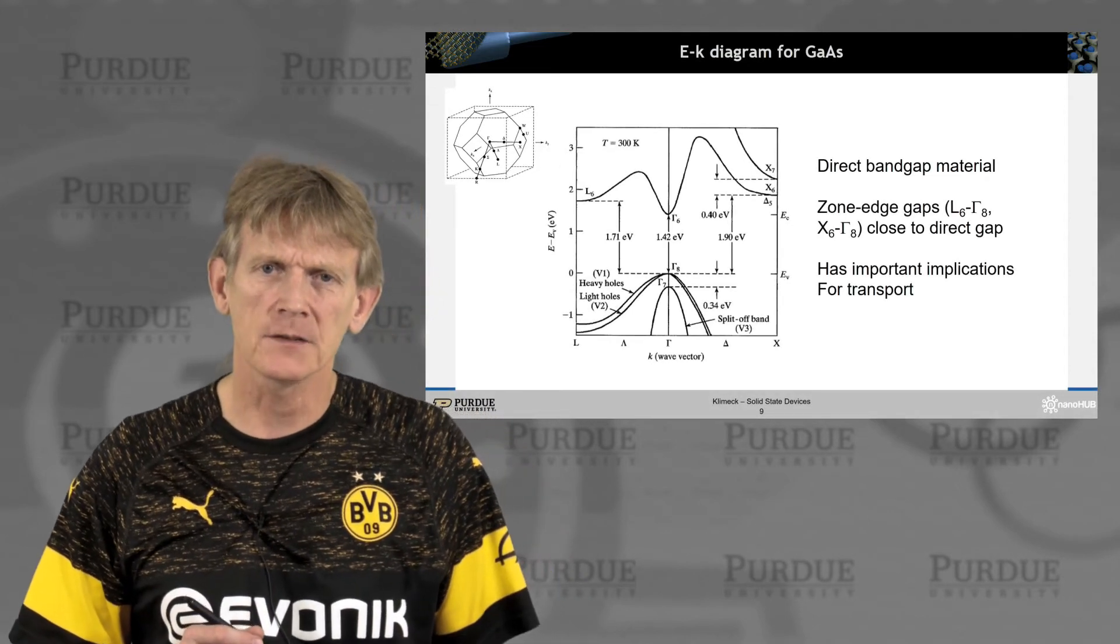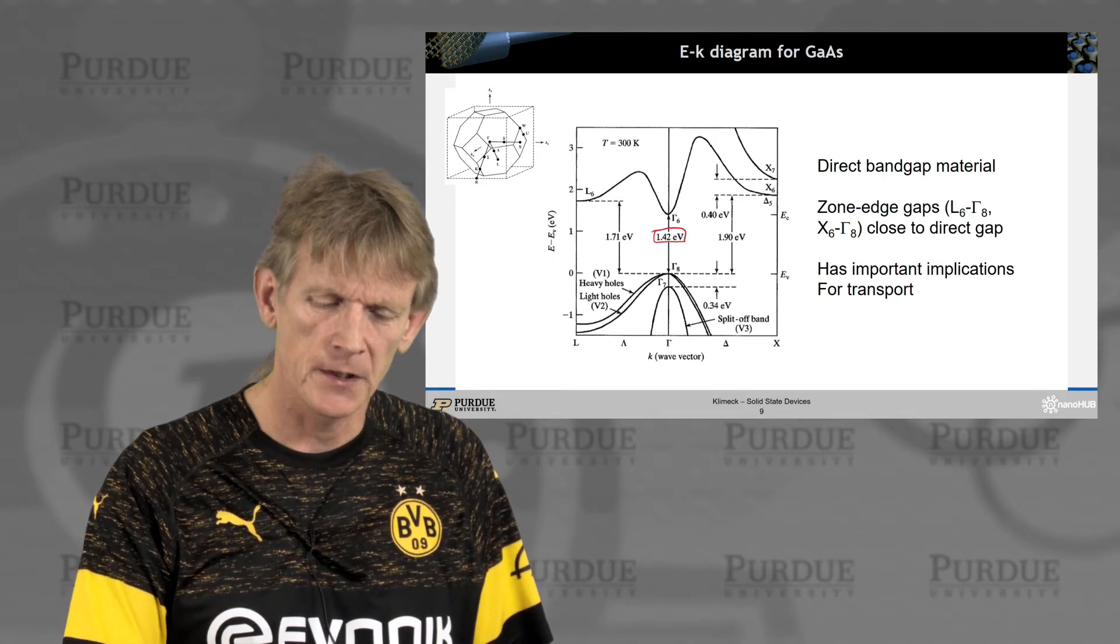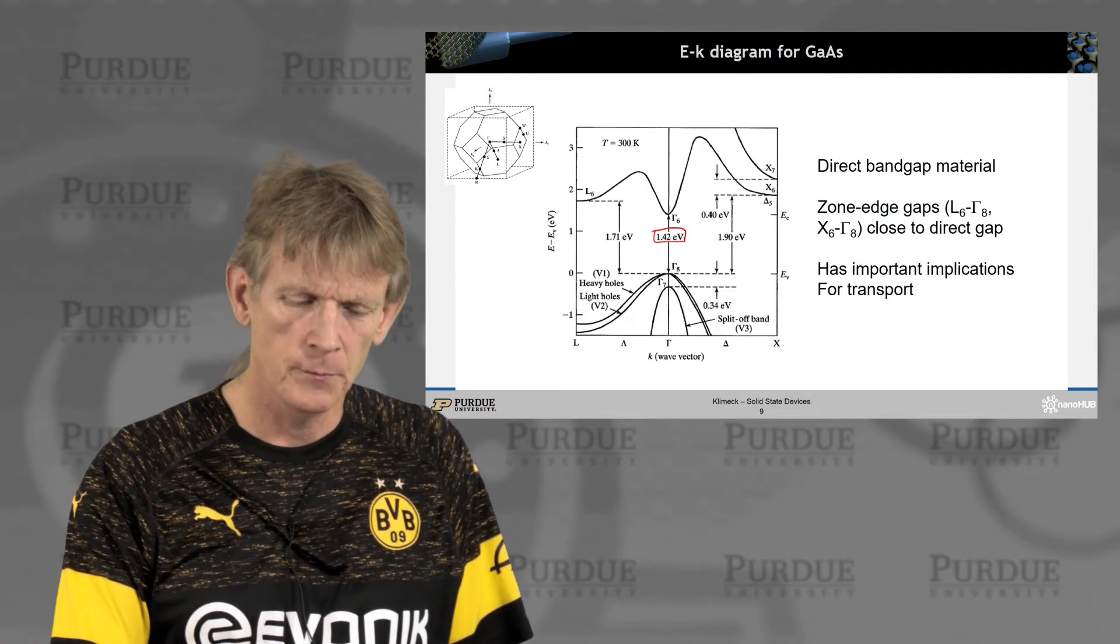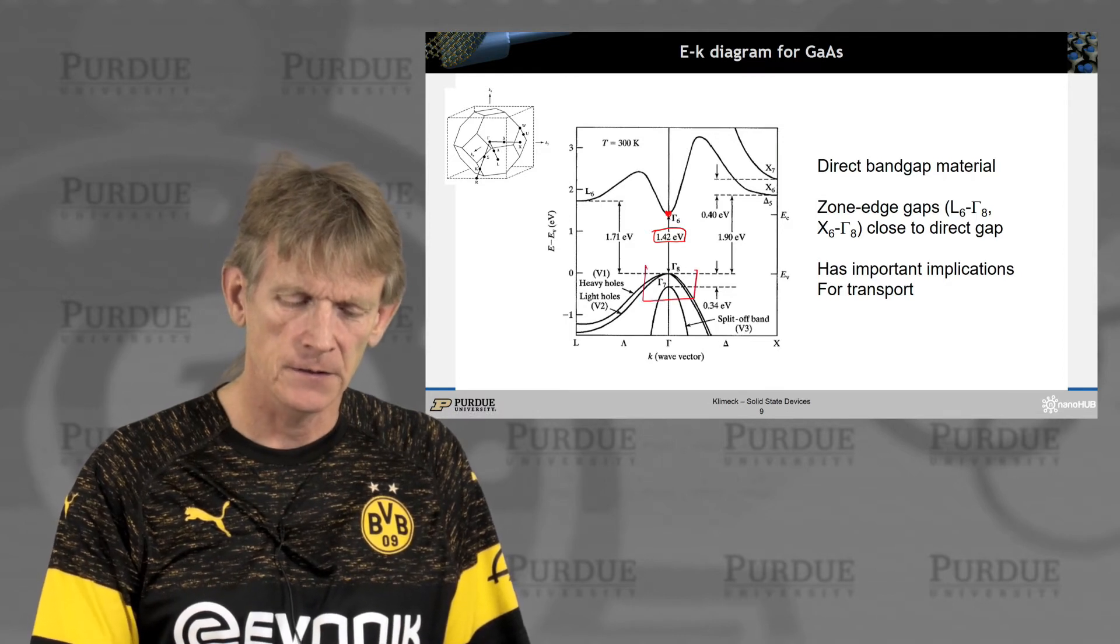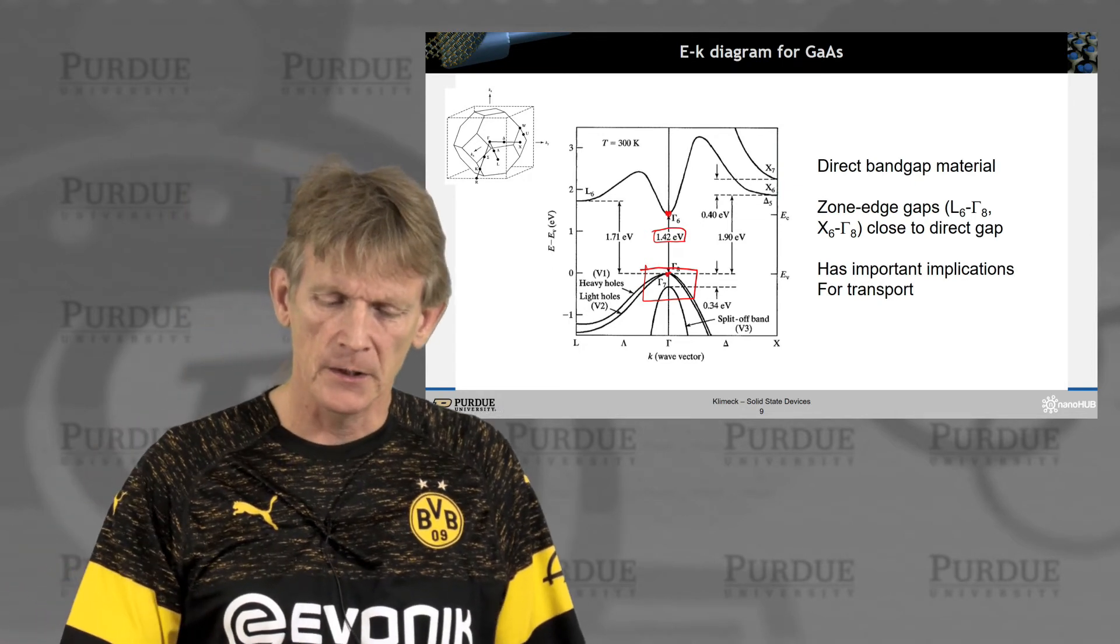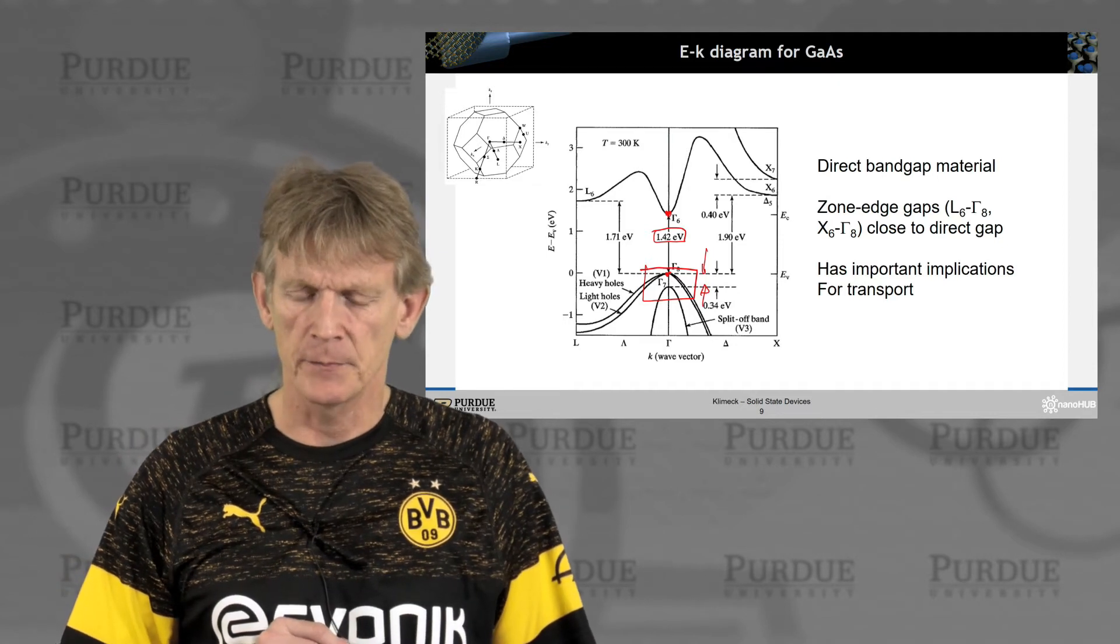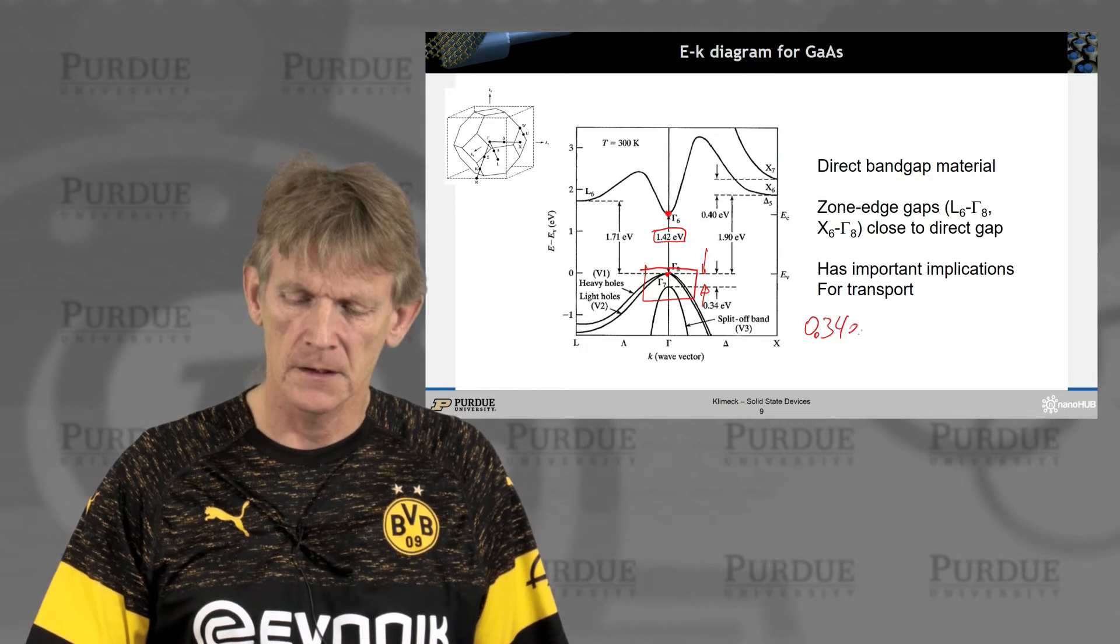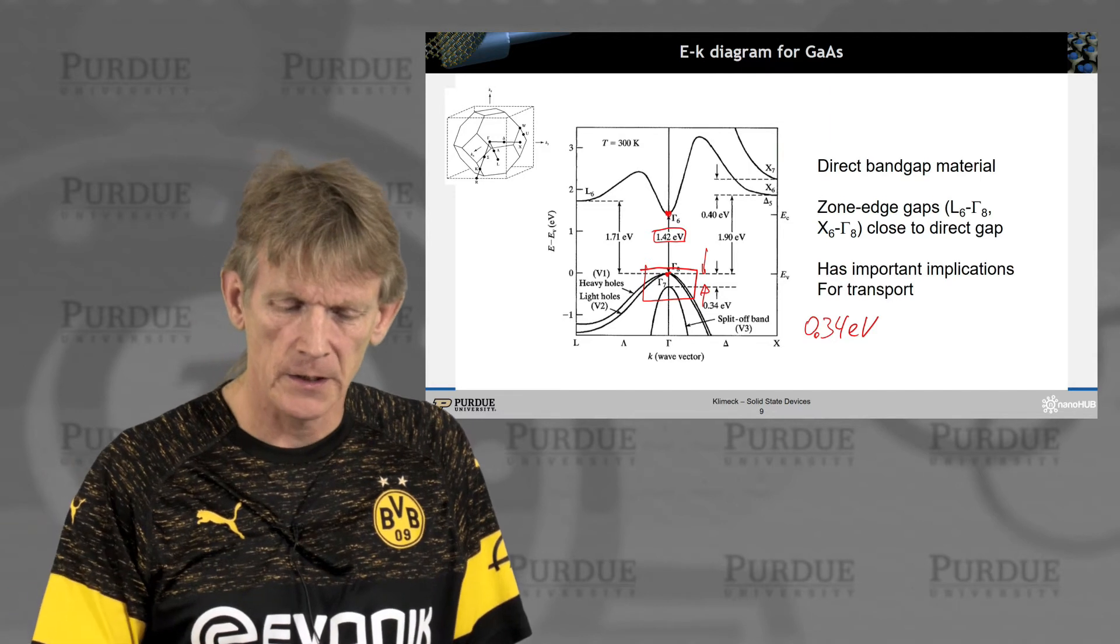All right. Now let's look at gallium arsenide in a little bit more detail. This is gallium arsenide band structure at room temperature. Its gap is 1.42 eV. Its minimum conduction band edge is, as I mentioned here, gamma. The three valence bands of relevance are here. They're topping out at the gamma point as well. The split-off band here for the valence band is 0.34 eV away from the top of the valence band.